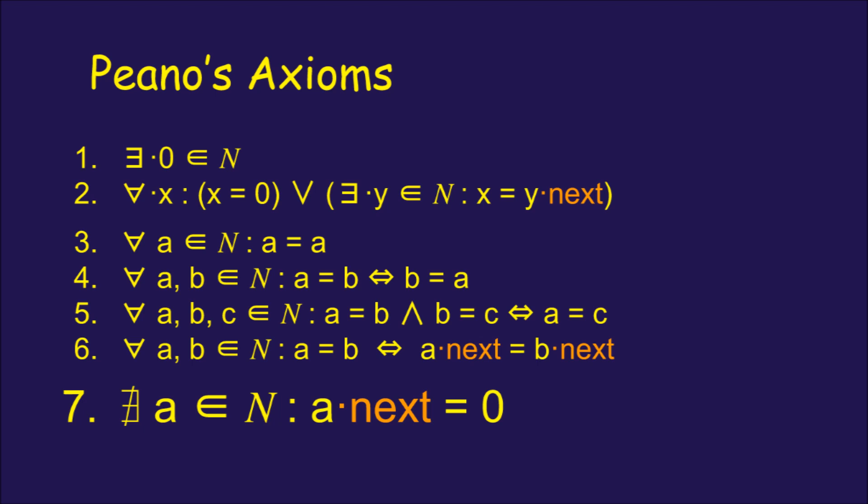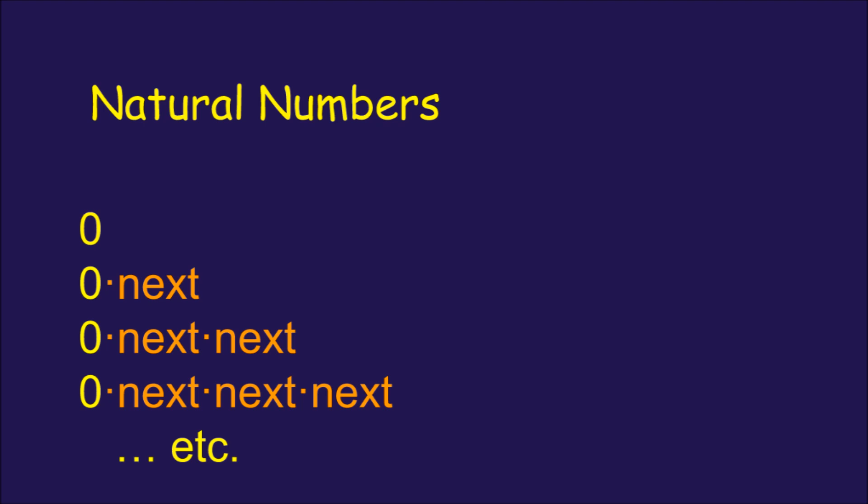With one final rule, that there is no number that we can append a .next to to get 0, we've defined a sequence that starts at 0 and keeps going forever.